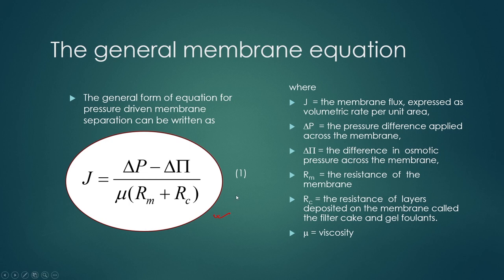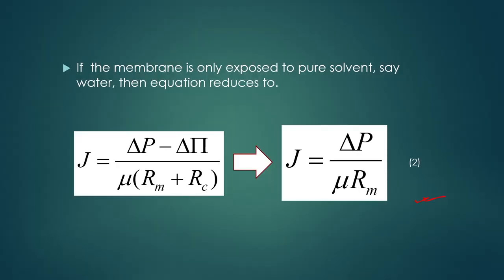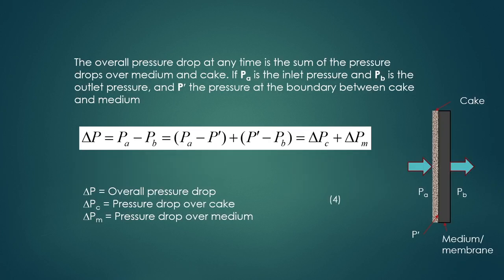If the membrane is exposed to a pure solvent with no other components, then Δπ equals zero and cake deposition is negligible compared to membrane resistance, so the equation simplifies to: J = ΔP / (μ × Rm).